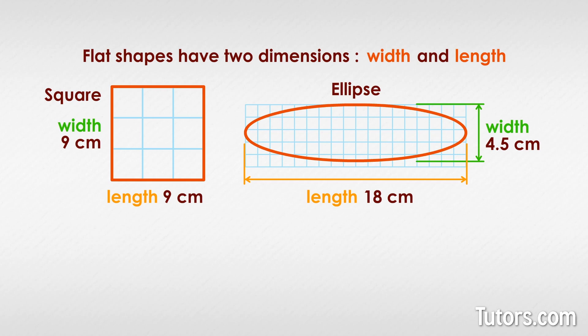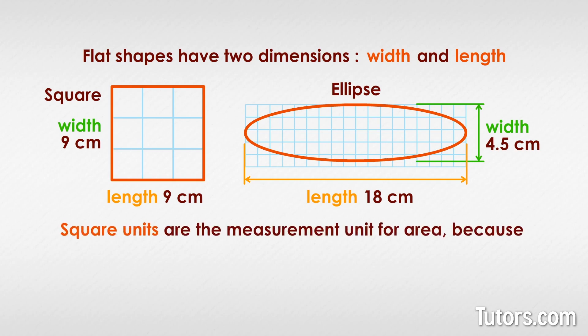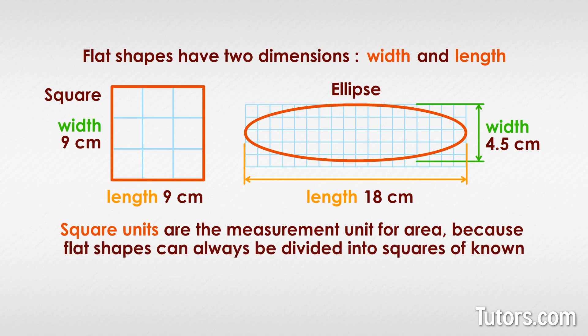Counting the square units in the square is easy. But how can you count all the square units in the ellipse — how much of the squares are inside the ellipse just under the top curve or at the ends? Fortunately, mathematics has a fast way to add up all the squares without counting them. Square units are the measurement unit for area, because flat shapes can always be divided into square units of known dimensions.